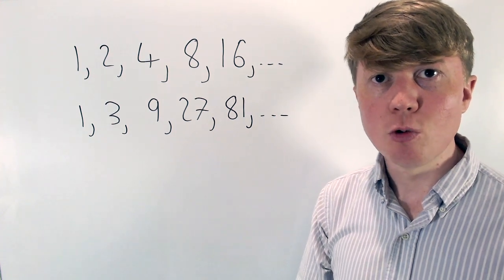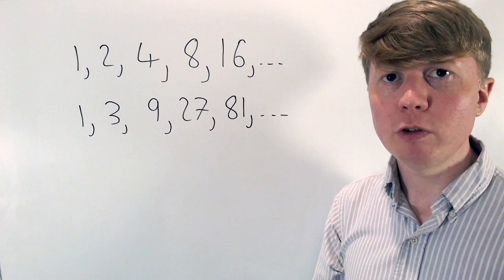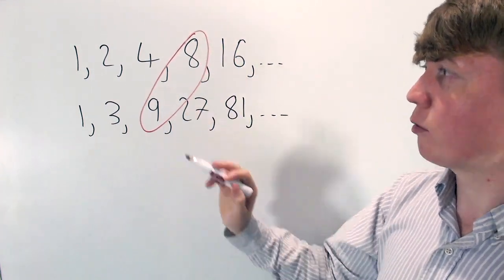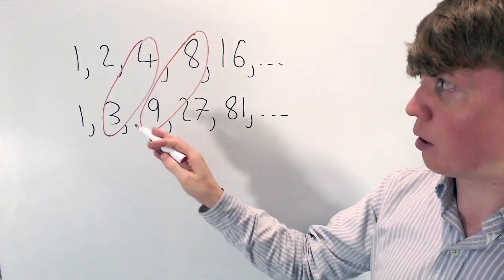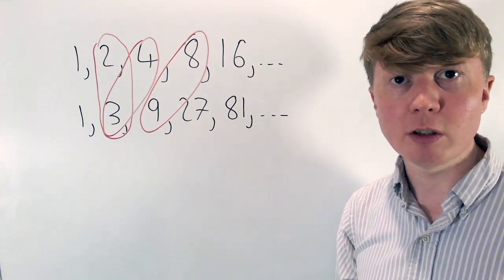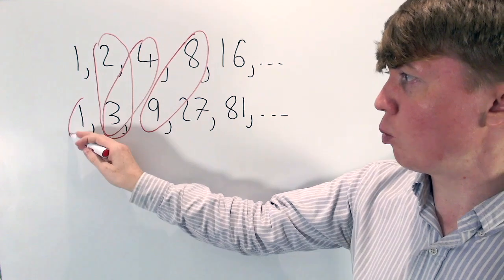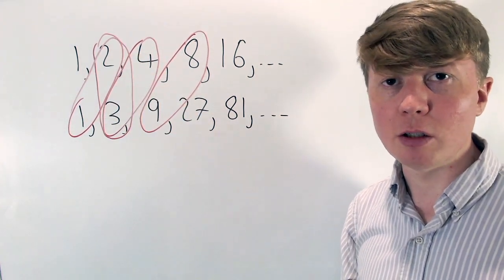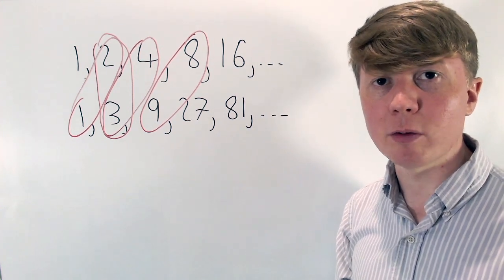We're going to look at powers of 2 and 3. There are some powers of 2 and 3 which are very close to each other. For example, 2 cubed is only 1 away from 3 squared, and 2 squared is only 1 away from 3 to the power of 1. They're both within one of each other. Also if we allow 3 to the power of 0, this is just 1 away from 2 to the power of 1. So there are quite a few examples of powers of 2 and 3 that are 1 away from each other.